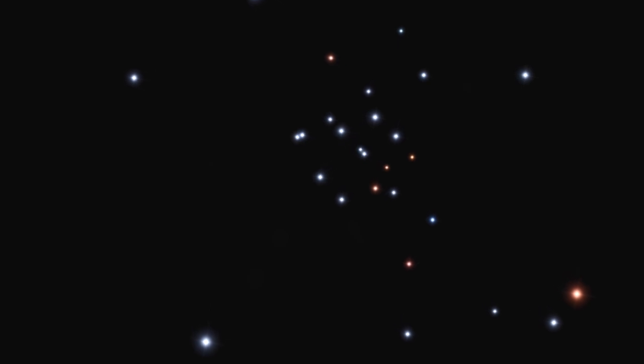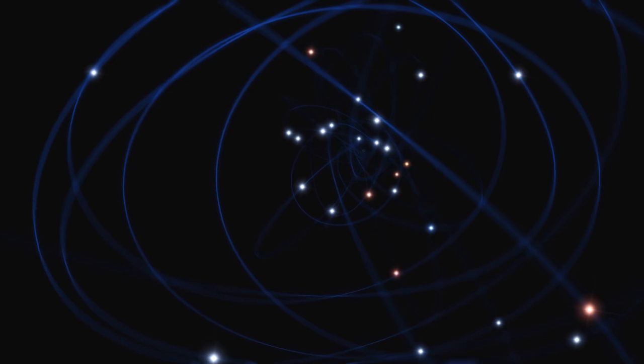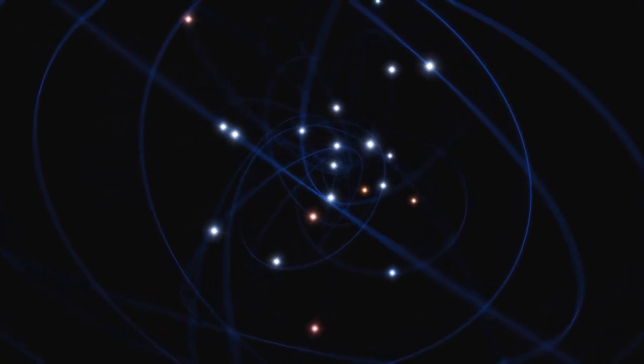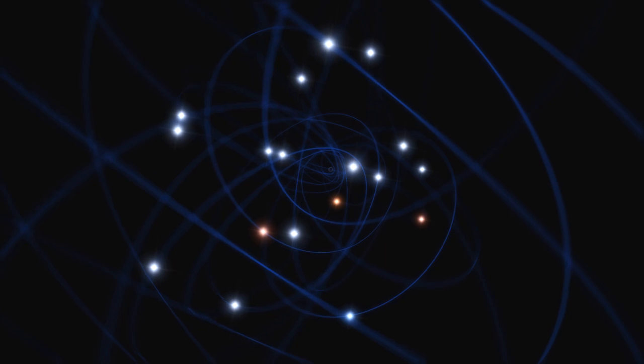Now what these motions showed was that these stars aren't just moving about randomly, but that they are clearly orbiting a very massive central object. And the point is that this central object is completely unseen.